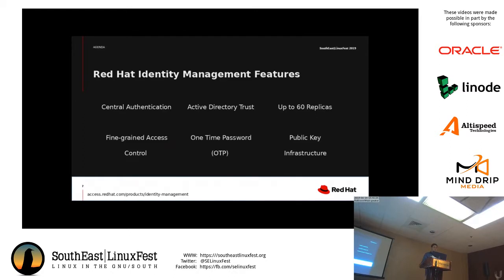A little bit about Red Hat Identity Management. This is a very simplistic overview, but with Red Hat Identity Management, you get central authentication, which includes an LDAP structure, 389DS. That will contain all of your user information, UIDs and GIDs, names and things like that, plus Kerberos from MIT Kerberos. So you get a really nice secure password tunnel.